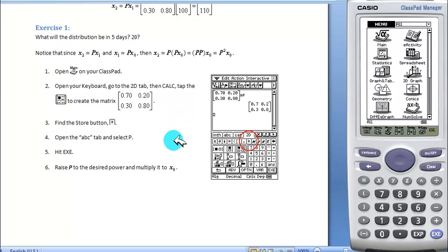What about after 5 days, or 20 days? Well, we're going to raise P to the power of whatever day we need, so we're going to need to store P as a variable in order to do this nicely and efficiently.